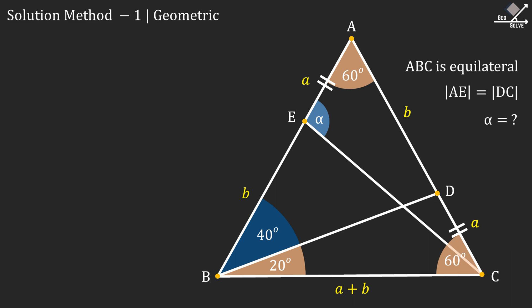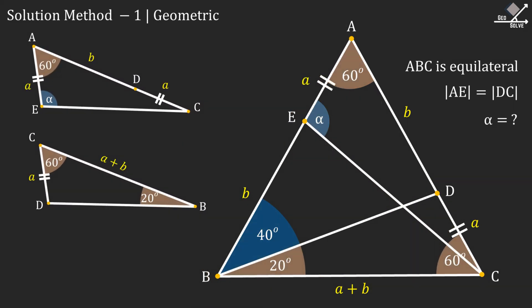Now let's isolate these two triangles and look a little bit closer. We can immediately calculate this angle as 100 degrees. And now if you notice,